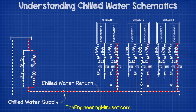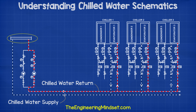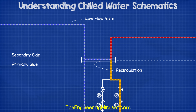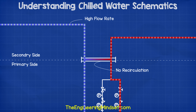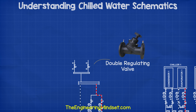Notice there is a common header here between the flow and return lines. This separates the system into primary and secondary loops and allows a constant flow rate in the primary side, which the chillers prefer as they require a minimum flow rate. It also allows a variable flow rate in the secondary side as the cooling load changes. The chilled water is generated and circulated in the primary side loop. The secondary side loop will pull the chilled water out of the header to cool the building and will then dump its warm return water back into the header. If the flow rate in the secondary side loop is low, then some of the chilled water will flow into the secondary loop and some of it will recirculate back to the chillers. If the flow rate is high in the secondary side loop, then all the chilled water will flow into the secondary loop and the return line will flow straight back to the chillers.